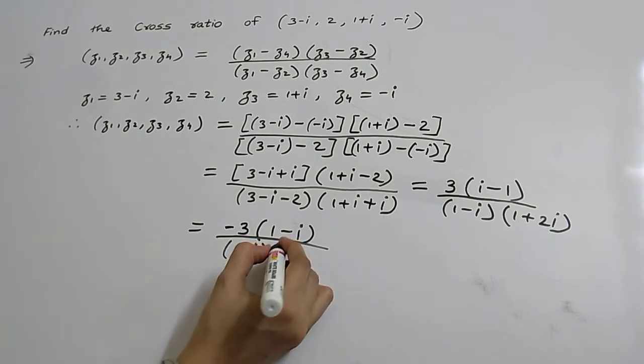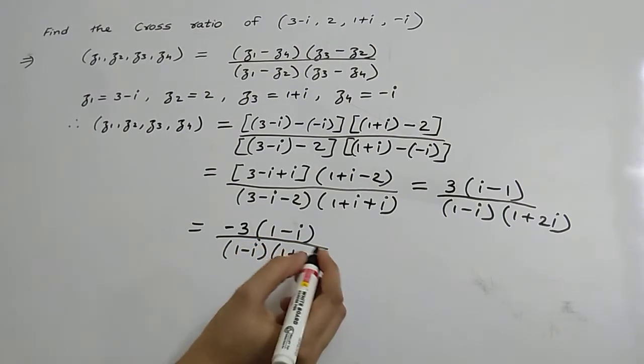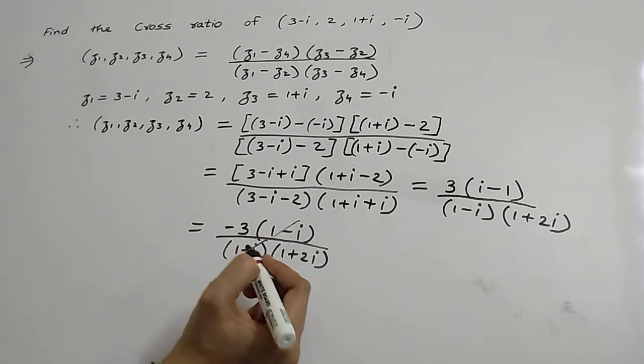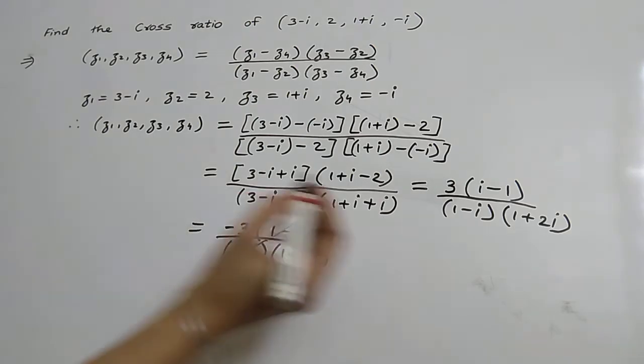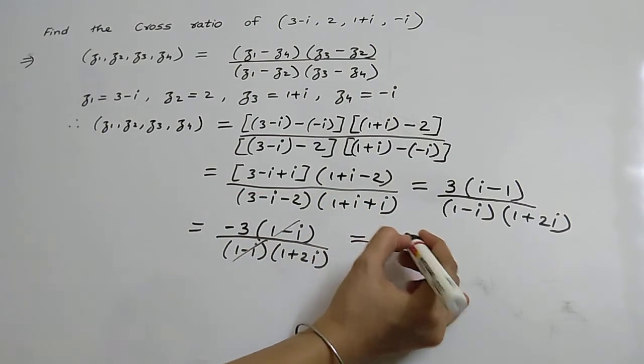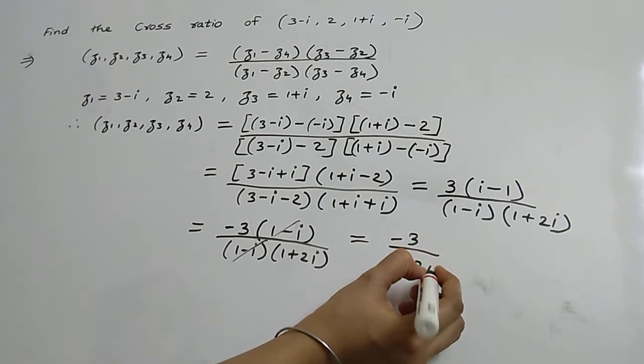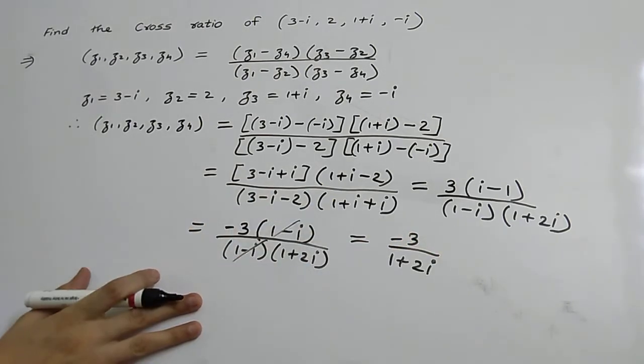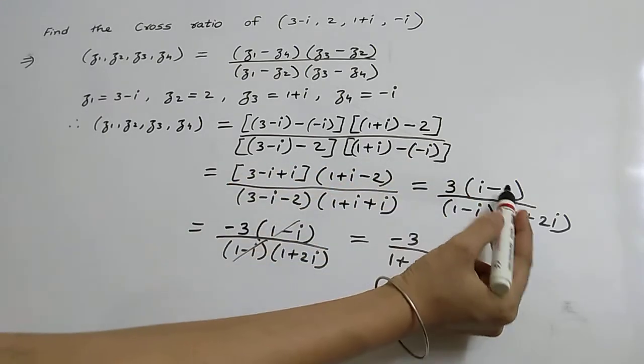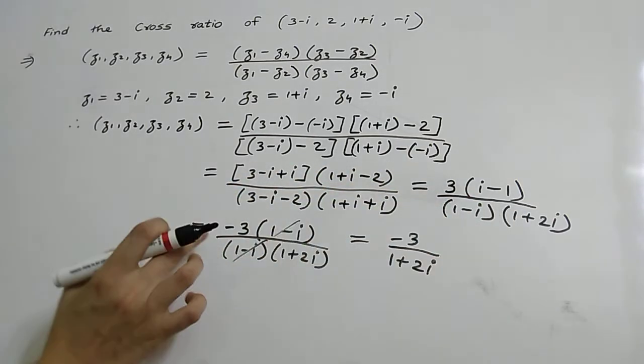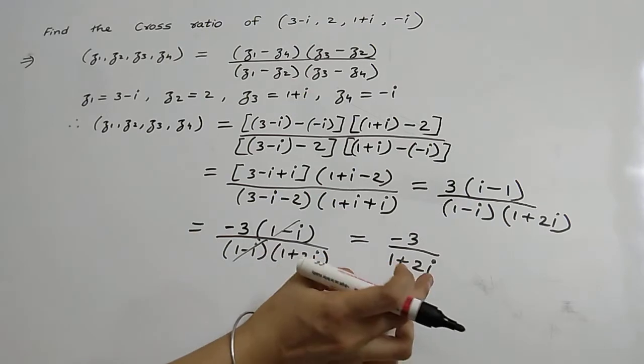We can take -i as a common factor, giving us -i(1 - i) upon (1 - i)(1 + 2i). The (1 - i) terms cancel, leaving us with -3 upon (1 + 2i).